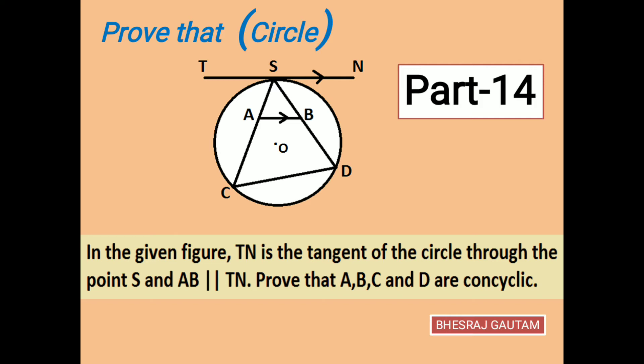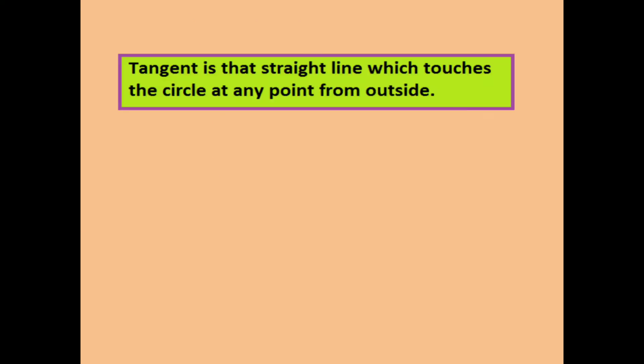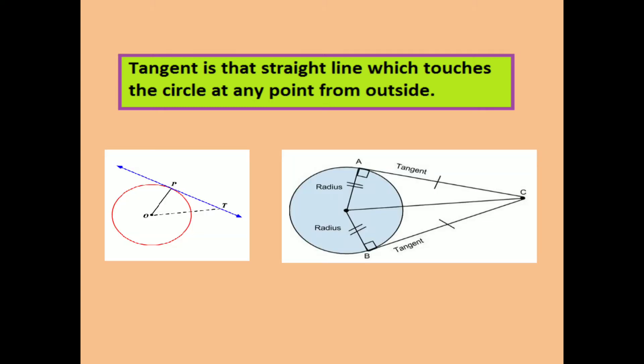Let's start our today's session with the definition of tangent and concyclic points. A tangent is a straight line which touches the circle at only one point from outside. In the first figure, PT is a tangent, and in the second figure, both line segments AC and BC are tangents.